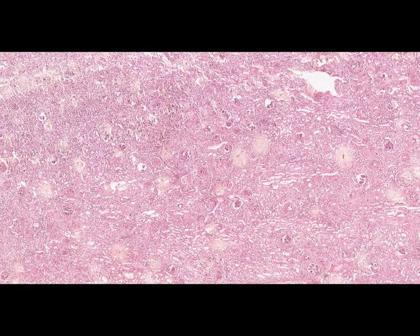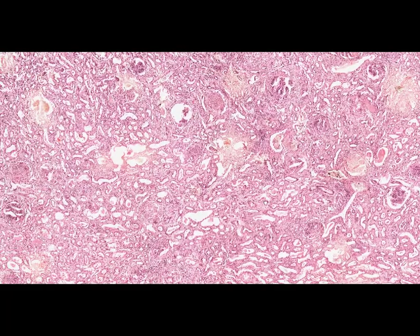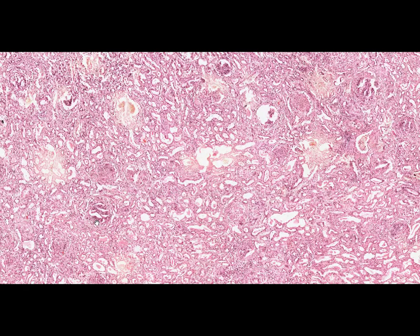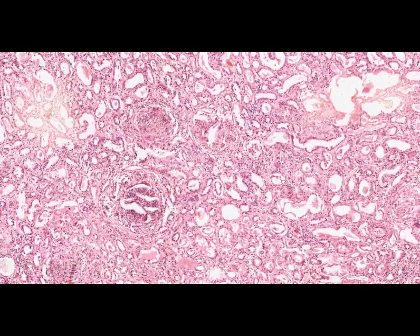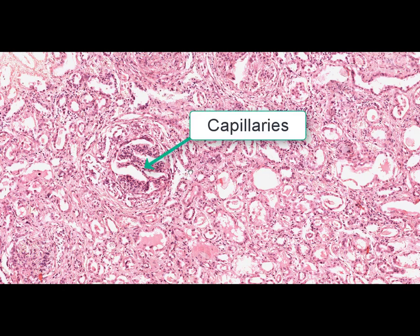At low magnification we can see renal glomeruli, tubules, and interstitial tissue. The main changes are found in the glomeruli. In most of the glomeruli, capillaries are compressed by proliferative podocytes, macrophages, and finally fibroblasts. These proliferative cells occupy the space of Bowman's capsule, creating so-called cellular crescents, which later are replaced by connective tissue to form fibrous crescents.